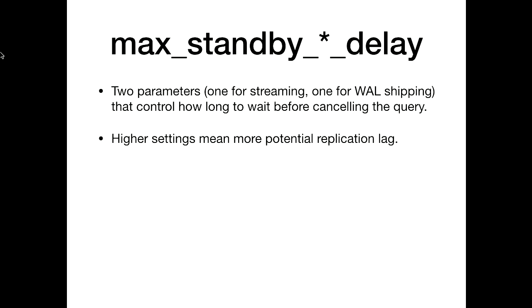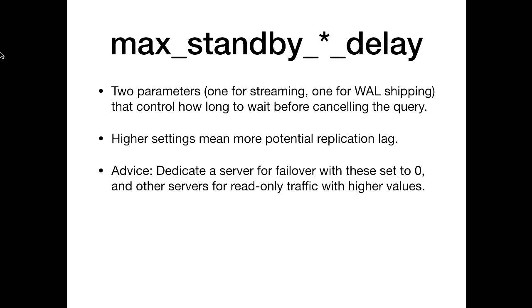Higher settings mean more potential replication lag — if you set it to five minutes, the secondary could fall five minutes behind the primary, which is not great if the purpose is failover. My advice: if you're using streaming replication for failover, dedicate a server for that with these set to zero so it stays as close as possible to the primary. If you want other secondaries for read-only load balancing, set them to higher values. You can set them to negative one, which means effectively infinity — it will hold replication as long as needed.